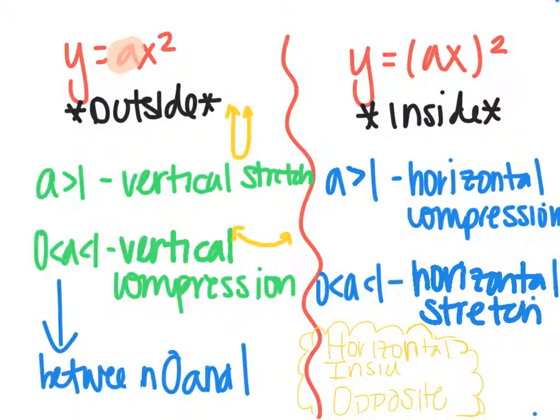If I have an a value that's inside the parentheses, it's going to be the opposite of what you think it should be. So you can remember the phrase HIO, which stands for horizontal is inside and it's the opposite.